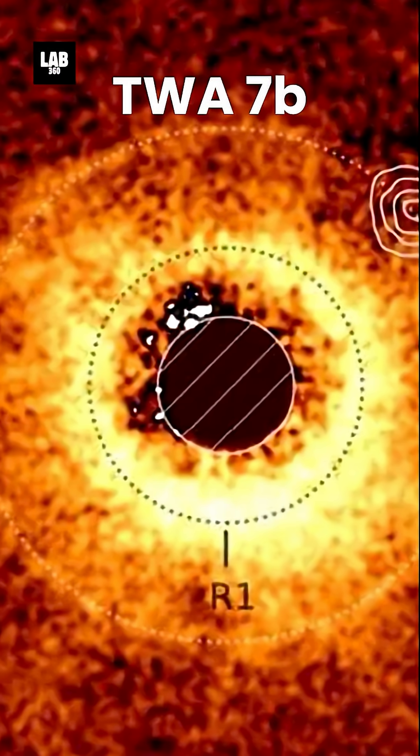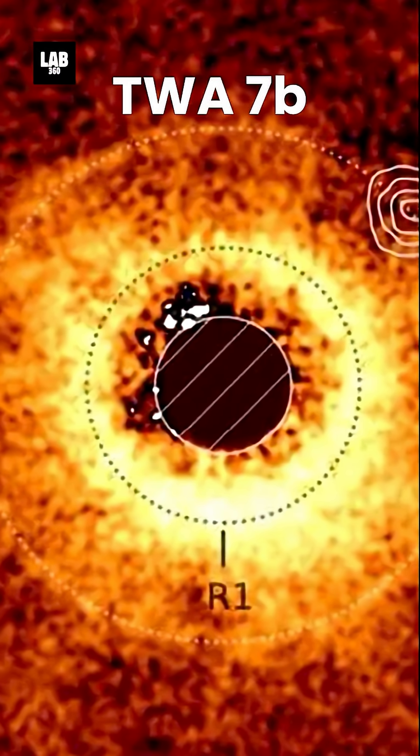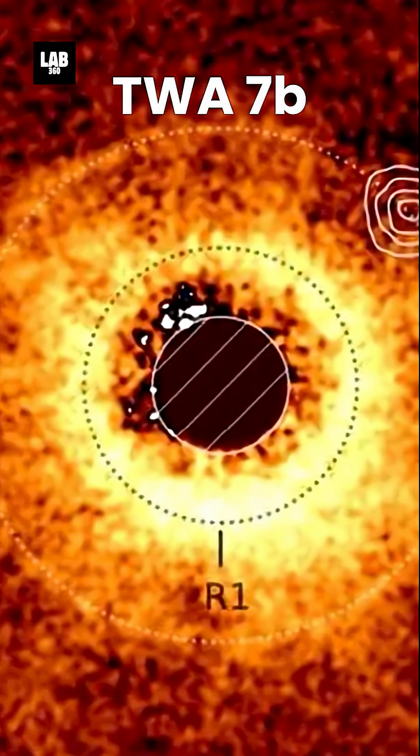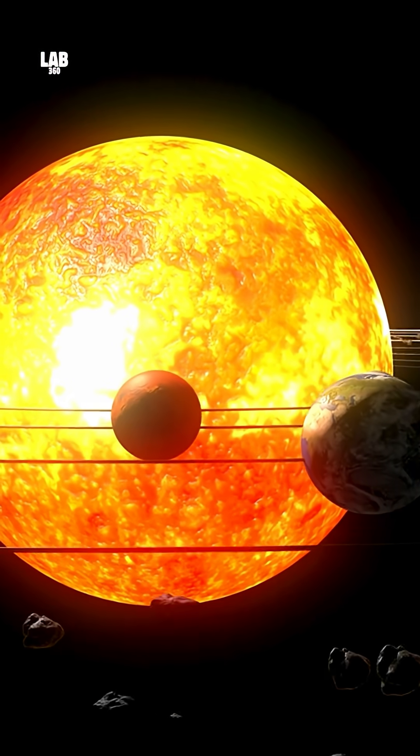The exoplanet, named TWA-7b, holds the distinction of having the lowest mass of any planet ever directly imaged outside our solar system.